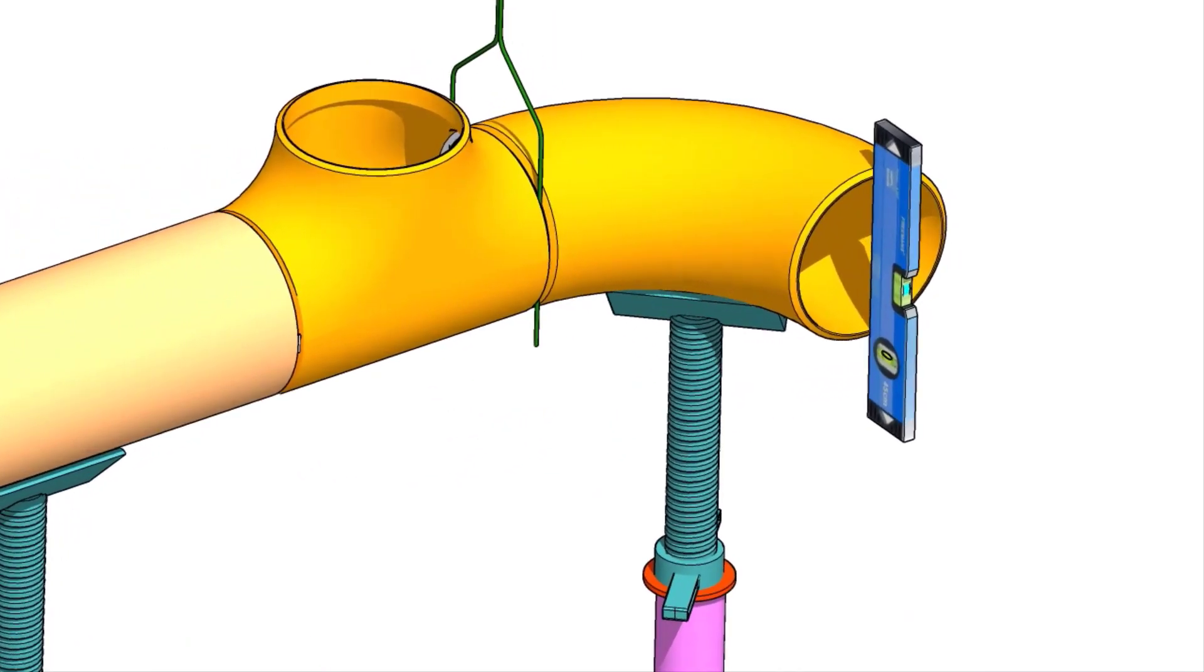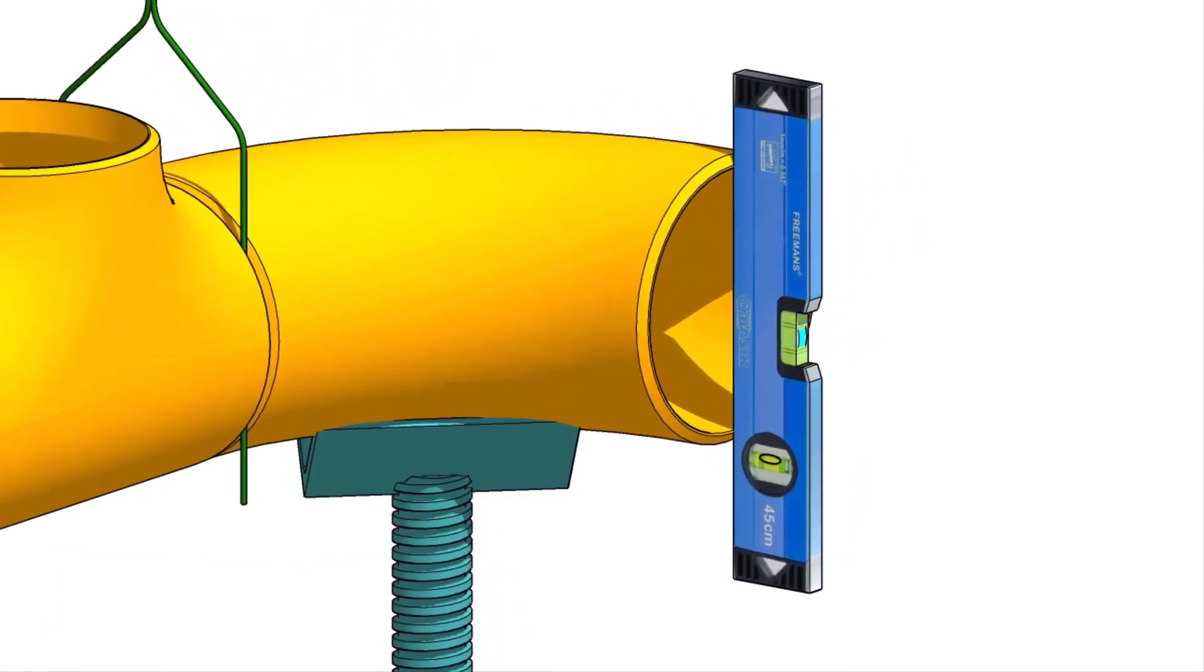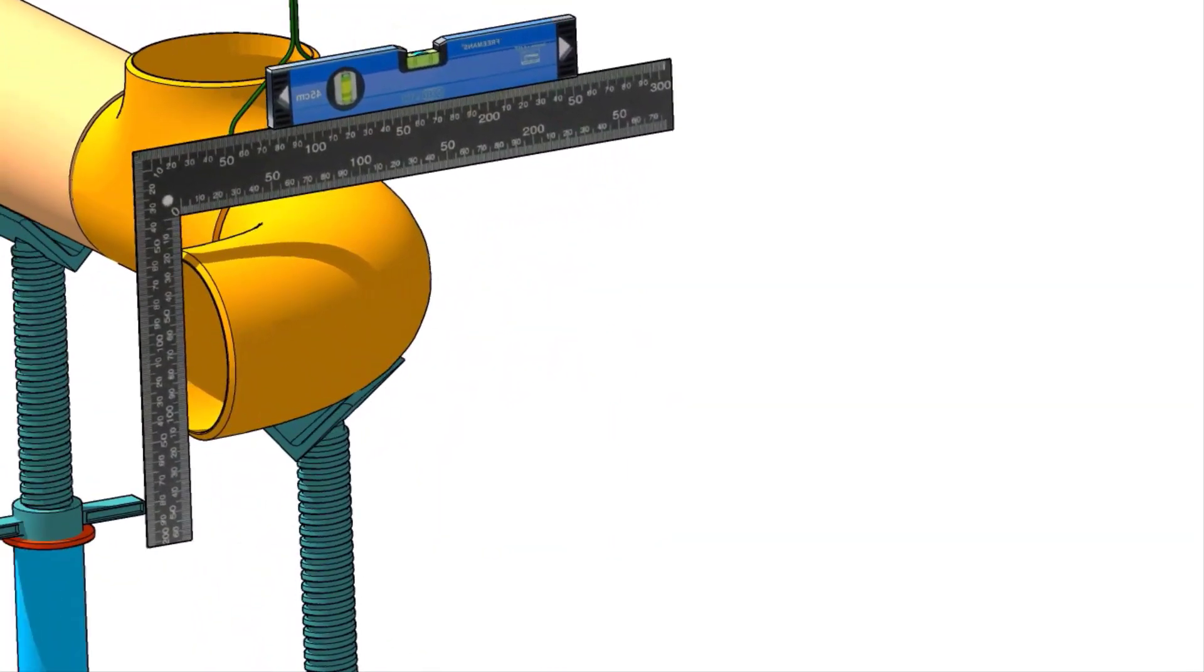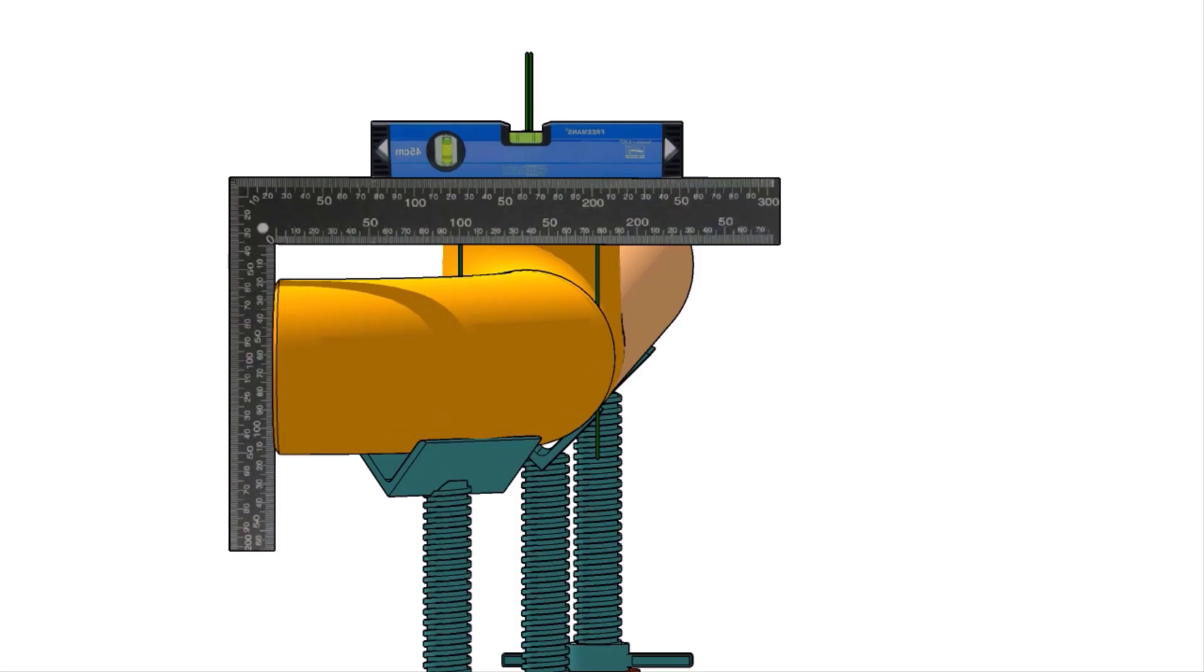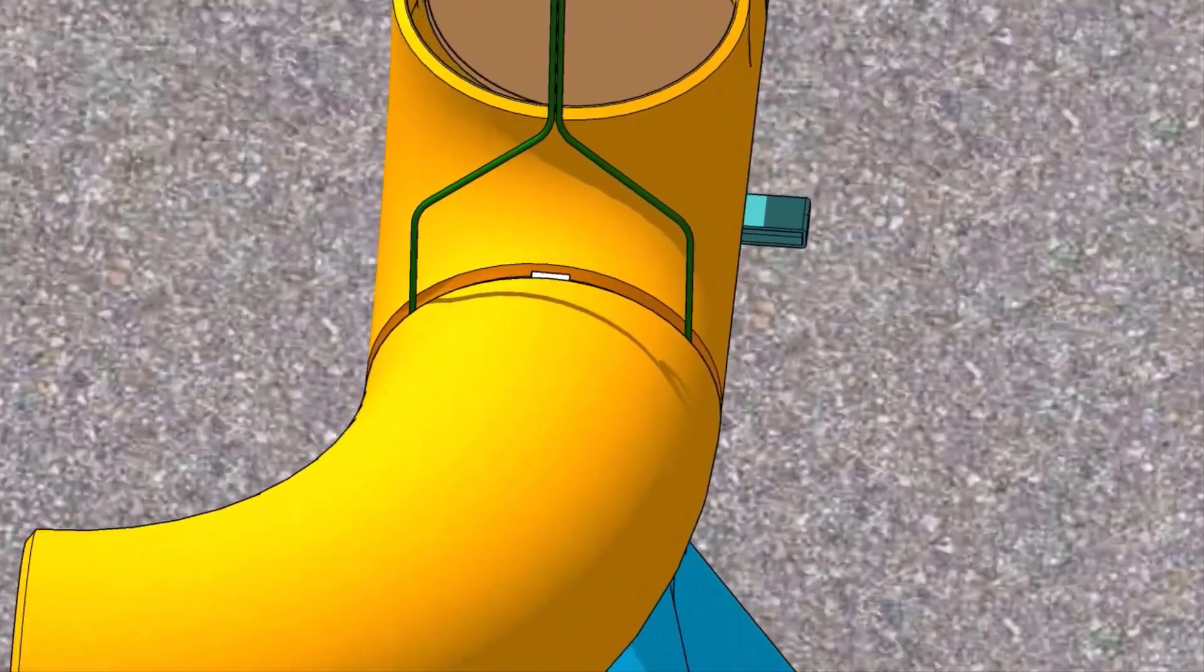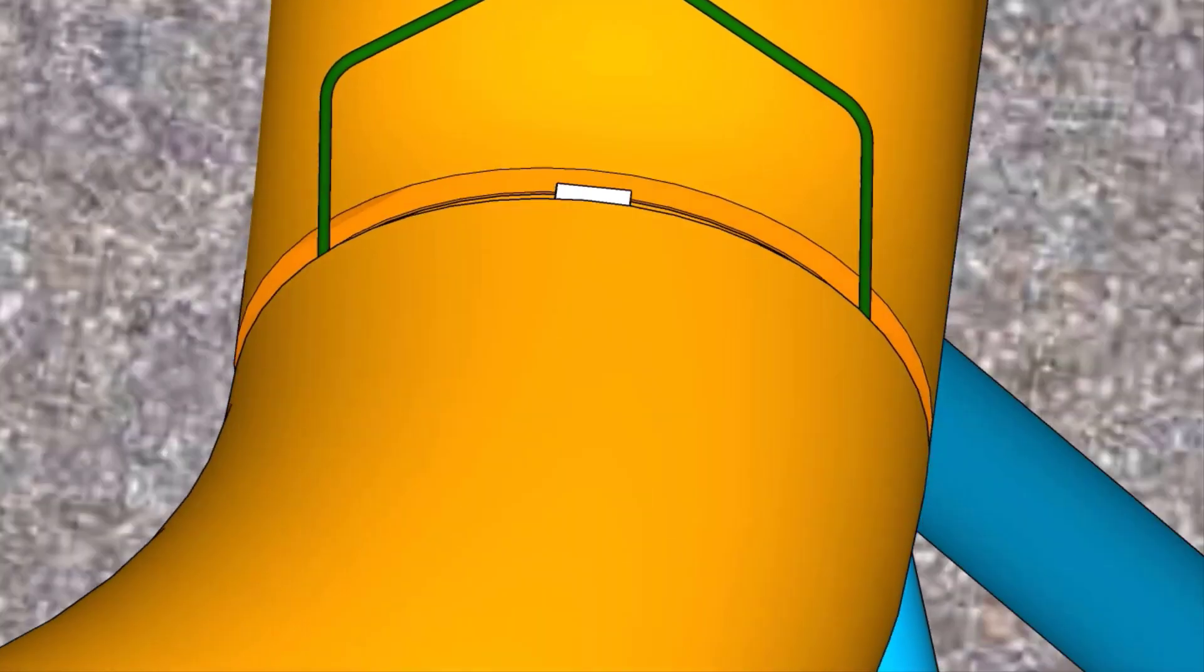You can maintain the level of the elbow face like this, or like this method. Tack weld on the top and the bottom side of the joint.